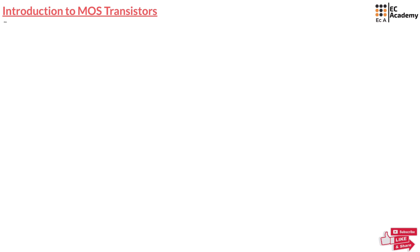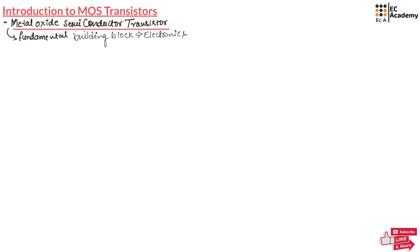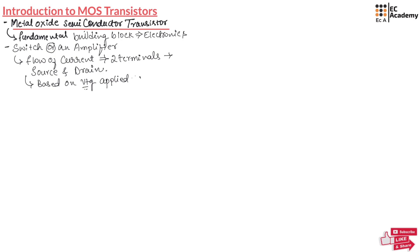A MOS Transistor, also known as Metal Oxide Semiconductor Transistor, is a fundamental building block of modern electronics. It acts as a switch or an amplifier, controlling the flow of current between two terminals — source and drain — based on voltage applied to the third terminal called the gate.